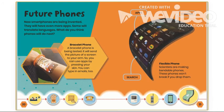Future phones: New smartphones are being invented. They will have even more apps. Some will translate languages. A bracelet phone is being tested — it will send the picture of a screen to your arm so you can use apps by pressing your skin and type emails too. Scientists are also making bendable flexible phones. These phones won't break if you drop them. The flexible phone has a camera, apps, and a search bar — just like the phones we have now, except you can bend it and it won't break.